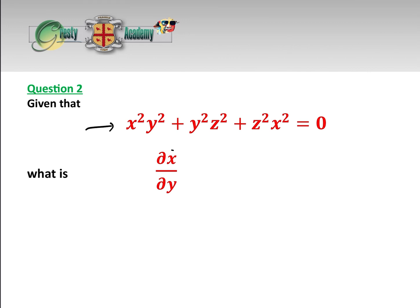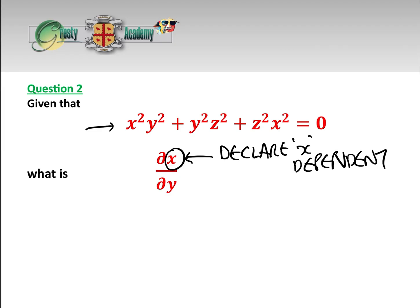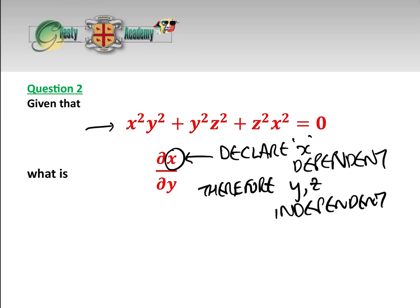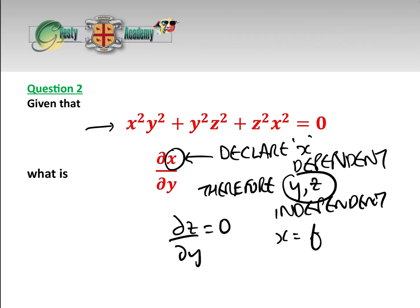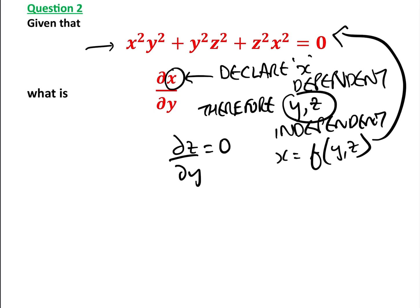Because we are asked for the rate of change of x with respect to y, we declare x as the dependent variable. Therefore y and z are the independent variables. Since y and z are independent, dz/dy = 0. We declare x as a function of y and z — it doesn't matter which variable we declare dependent, but we choose x here.